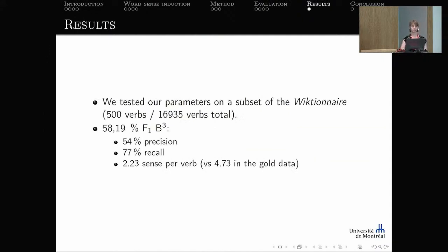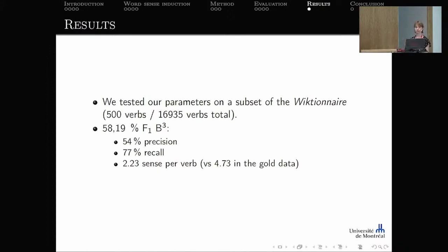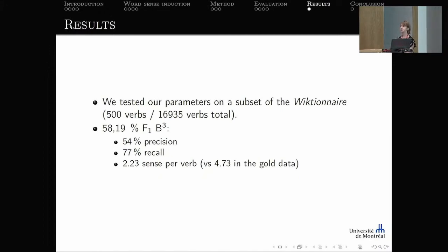The final evaluation was performed on a subset of 500 verbs from the Wiktionnaire, which contains 1,935 verbs in total — making full evaluation impractical. The result was an F1 score of 58.19%, with 54% precision and 77% recall, giving a good recall relative to precision. The system induced 2.23 senses per verb on average, compared to 4.73 senses per verb in the gold data.